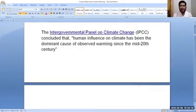The Intergovernmental Panel on Climate Change - the IPCC concluded that human influence on climate has been the dominant cause of observed warming since the mid-20th century. Human influence is the most affecting global warming.